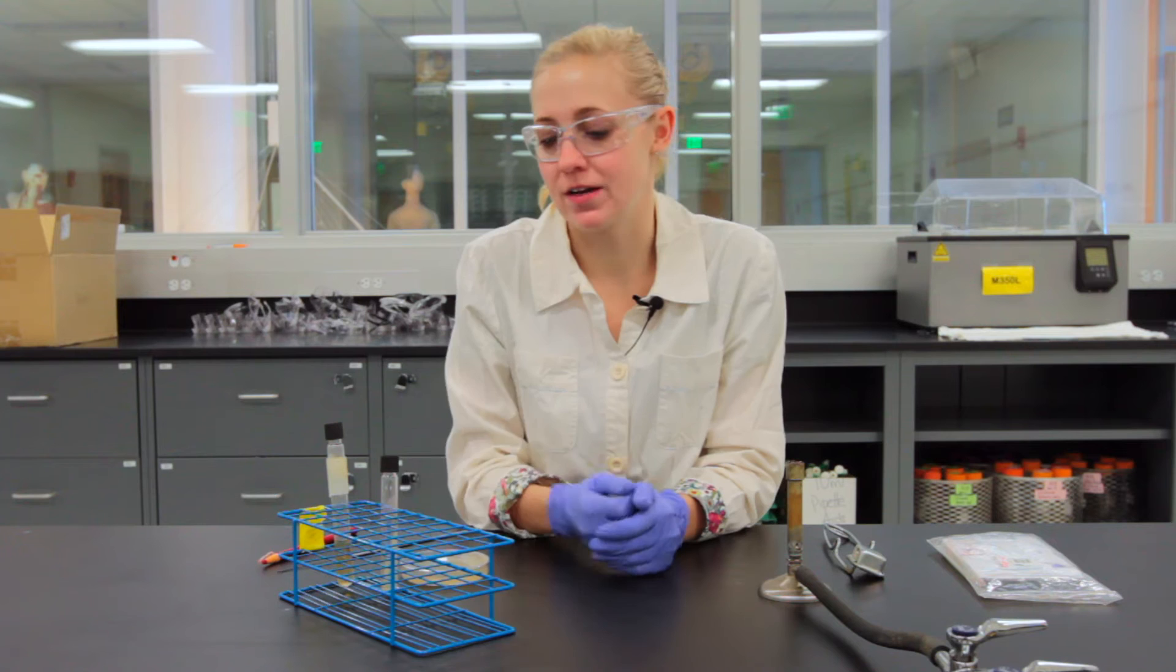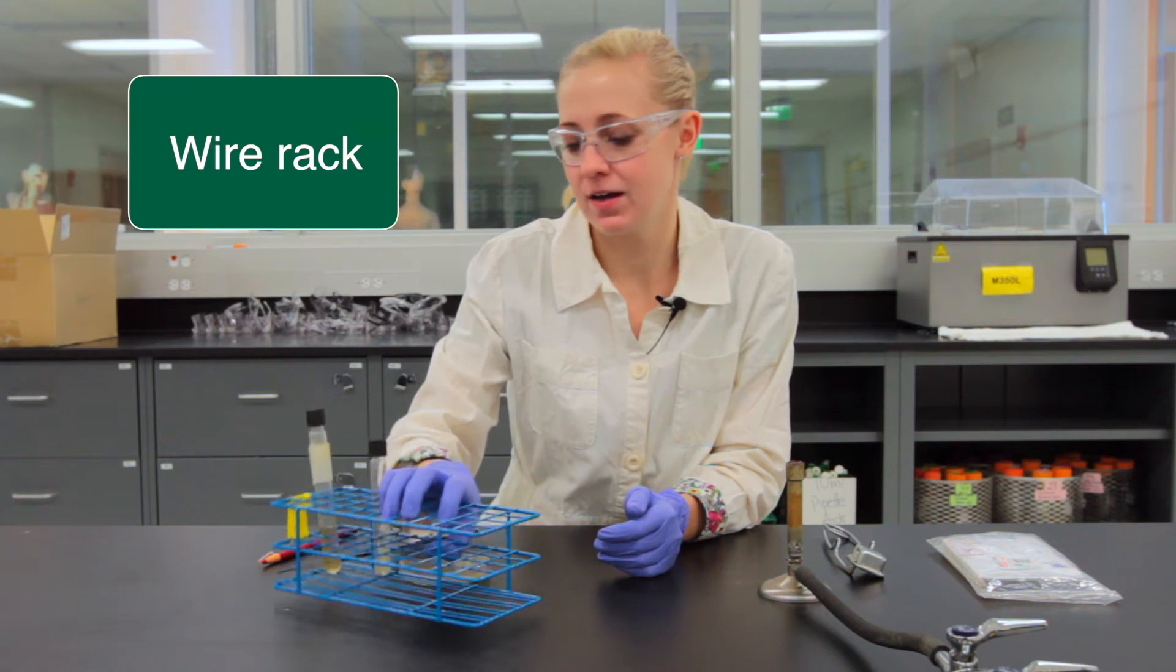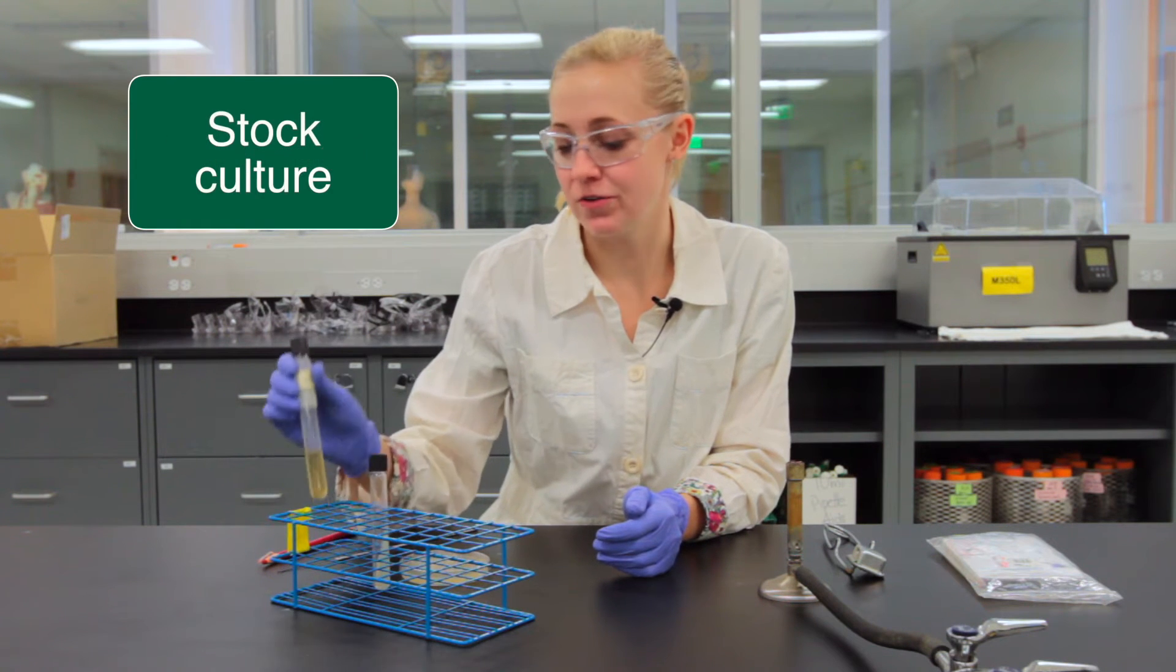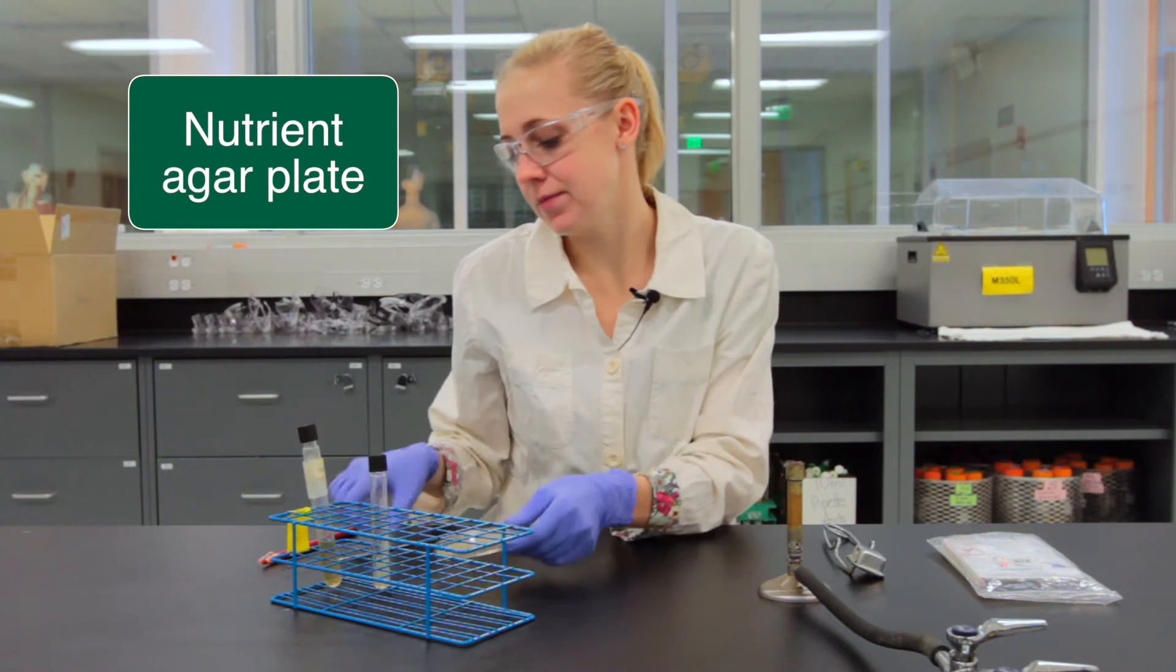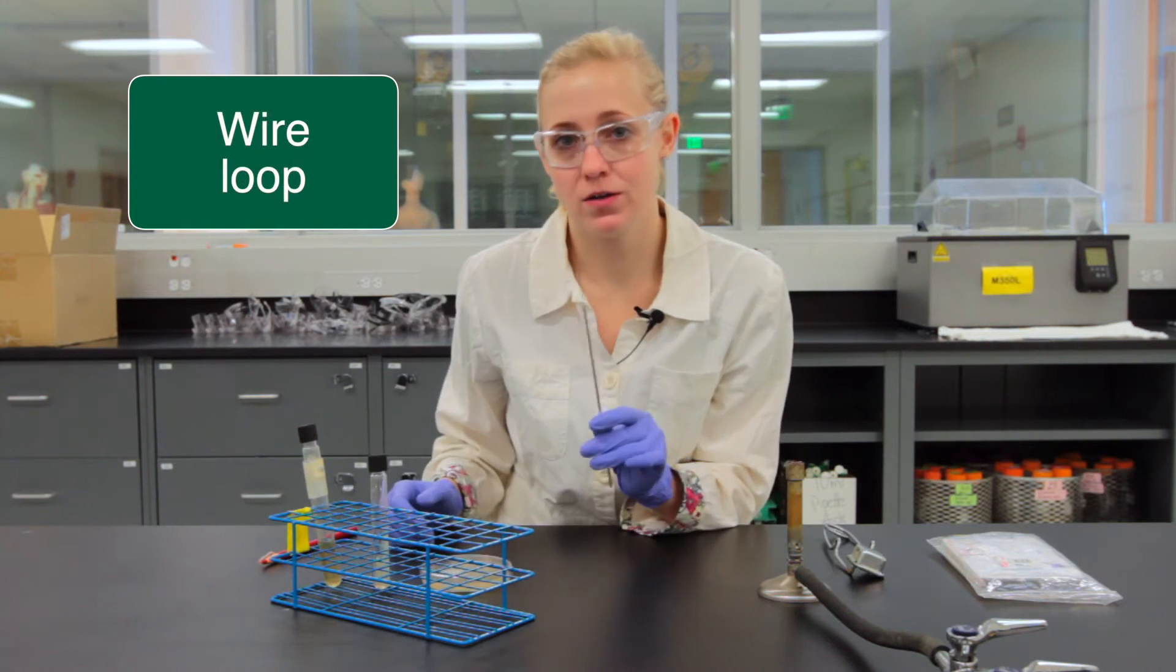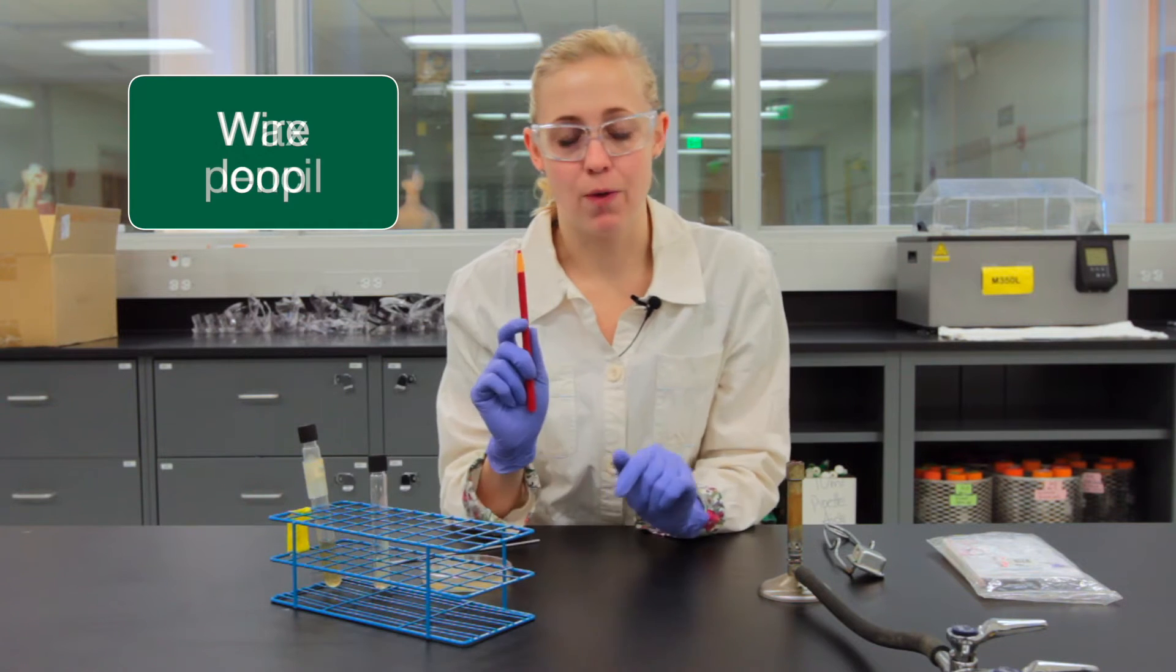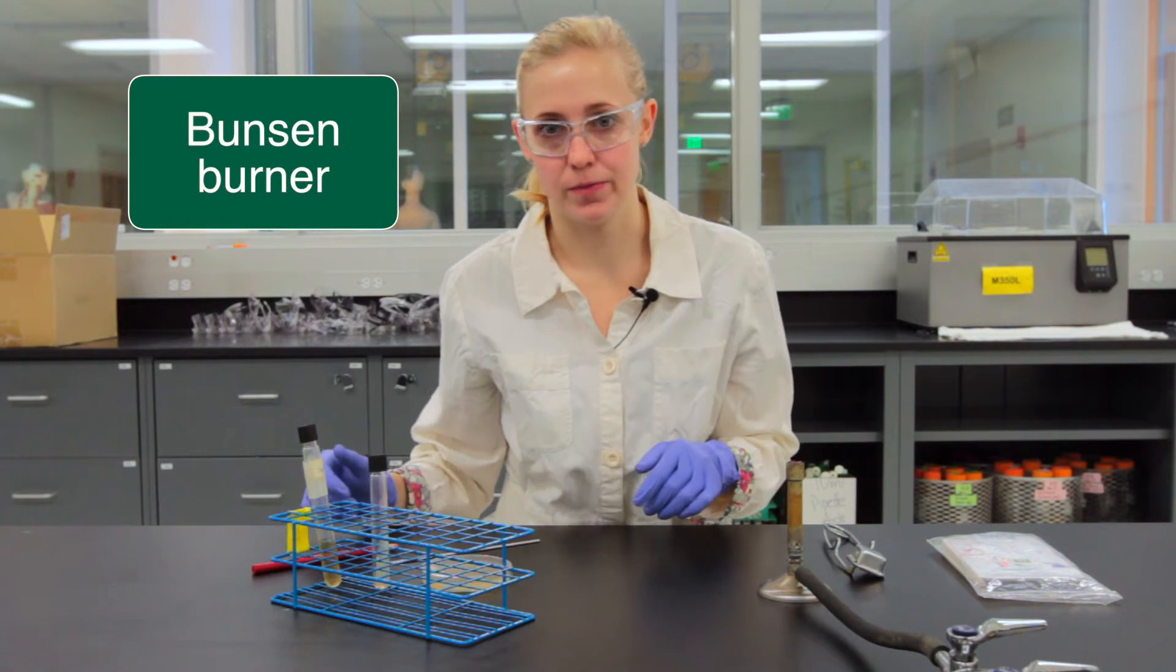And so you're going to need several things. First of all you'll need your wire rack, you'll need your stock culture, a nutrient agar tube or slant as well as a nutrient agar plate. You will need your wire loop for transferring, a wax pencil for writing as well as your Bunsen burner.